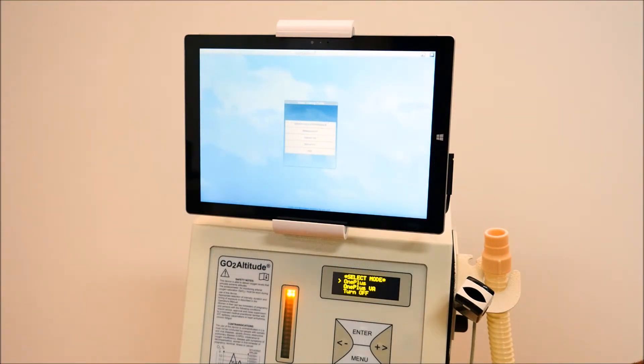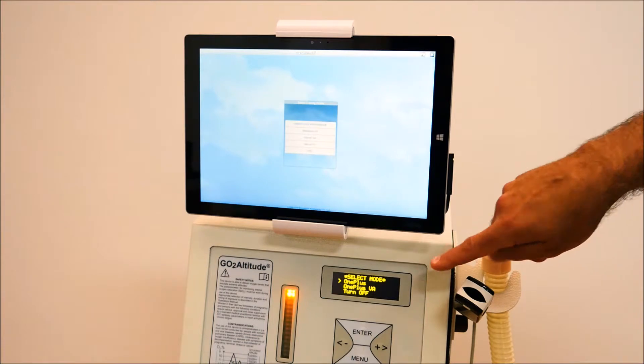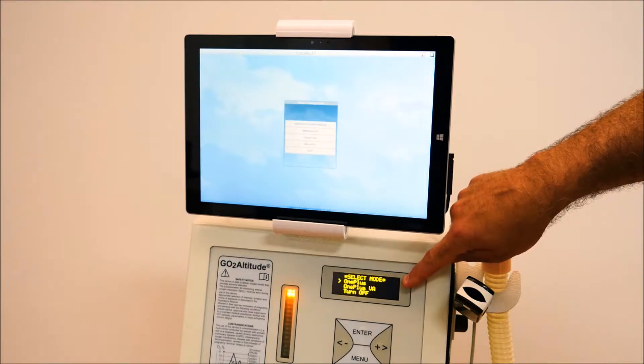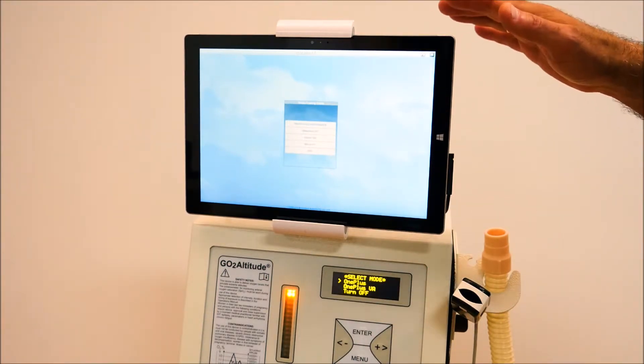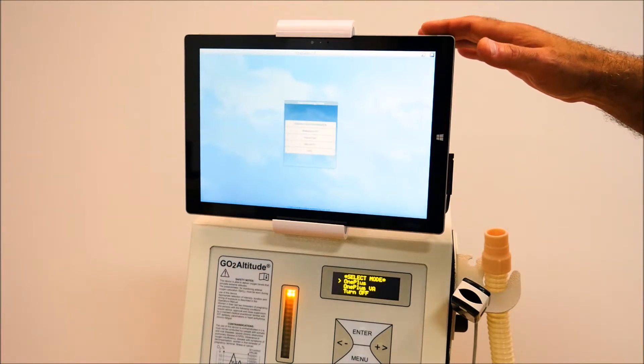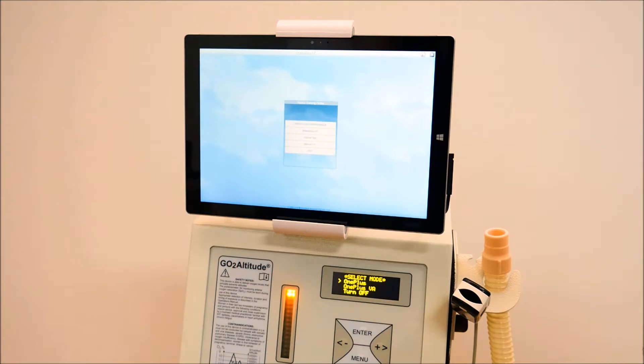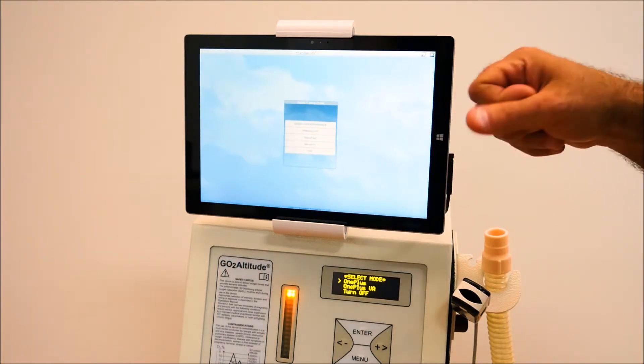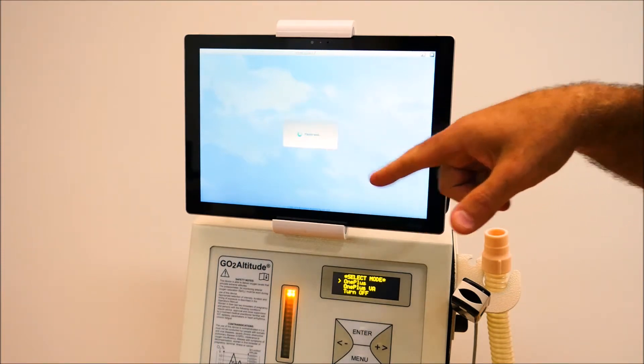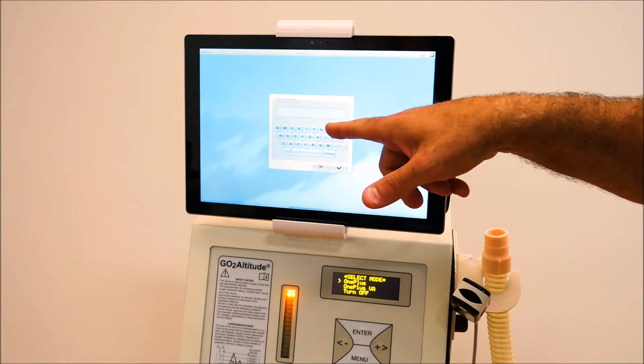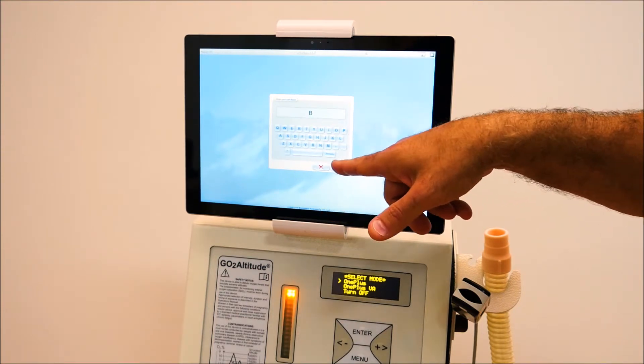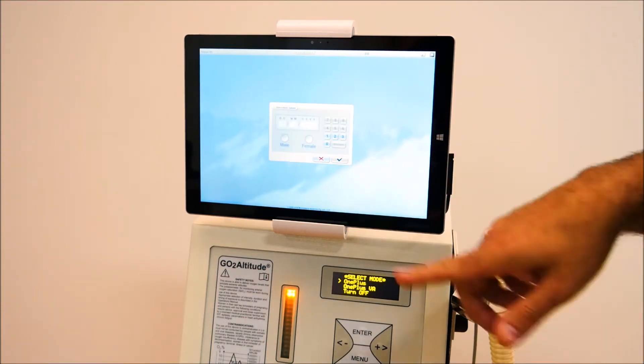After approximately two minutes of self calibration the device reaches the main screen which looks like that. In OnePlus VA mode, the device is fully controlled by computer, by the tablet PC, through wireless Bluetooth technology. All the operator needs is to select one of the training programs that are described in greater details in operational manuals. And in a few steps, the computer will be fully controlling the hypoxicator device.